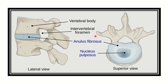First of all, we have to look at the normal intervertebral disc. This disc is located between the two vertebral bodies and has two parts: an outer part and an inner core. The outer part is the annulus fibrosus, which is a fibrous structure, and the nucleus pulposus is located in the central part of the intervertebral disc. The nucleus pulposus is protected by the annulus fibrosus, which lies outside it.